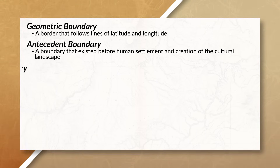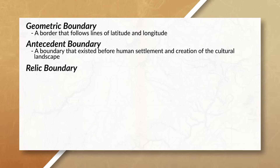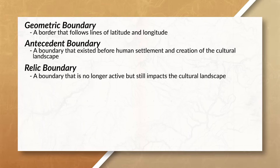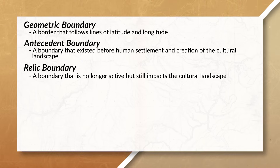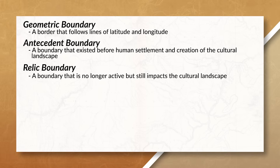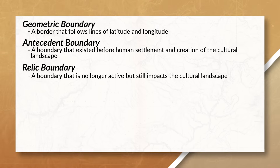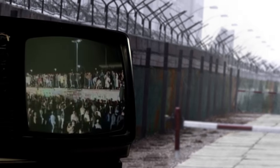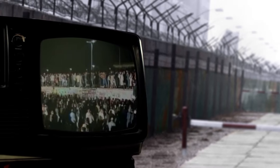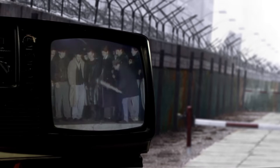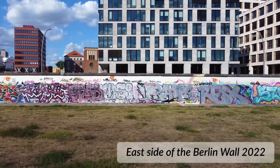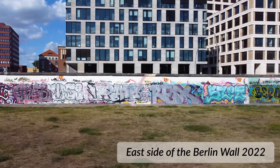Speaking of older boundaries, we also have relic boundaries. This is a boundary that does not exist anymore but still impacts the cultural landscape — it can still be seen or felt, but it's no longer an official boundary being used. An example of a relic boundary would be the Berlin Wall, which divided East Germany and West Germany. The wall itself is no longer an active border, but there are still parts of the wall up today that influence the cultural landscape.